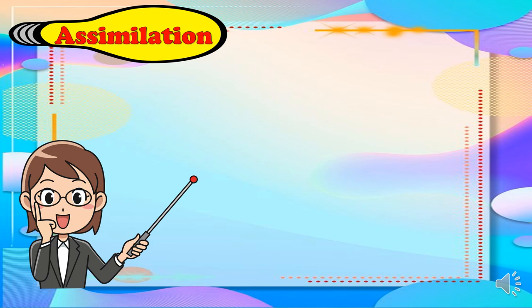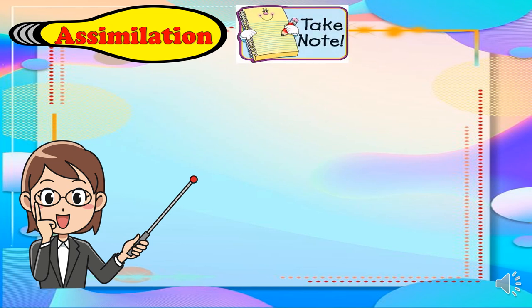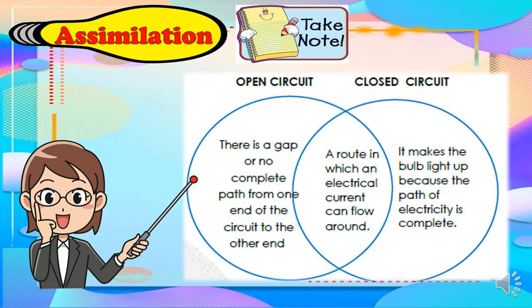Open circuit: there is a gap or no complete path from one end of the circuit to the other end. While the closed circuit, it makes the bulb light up because the path of electricity is complete. And there are similarities, we have a route in which an electricity current can flow around.